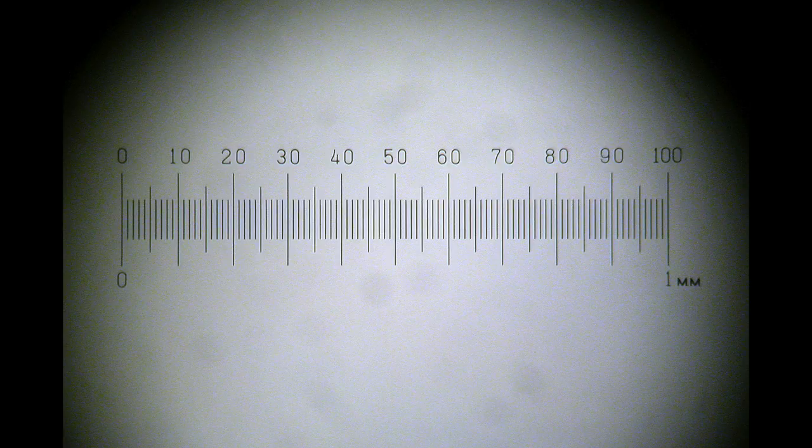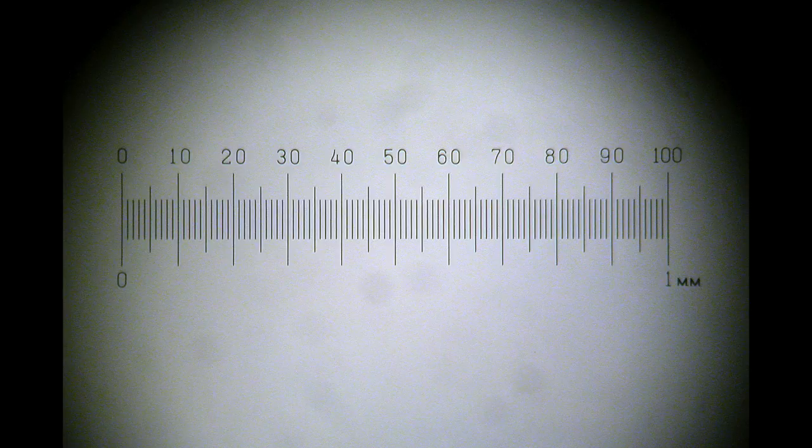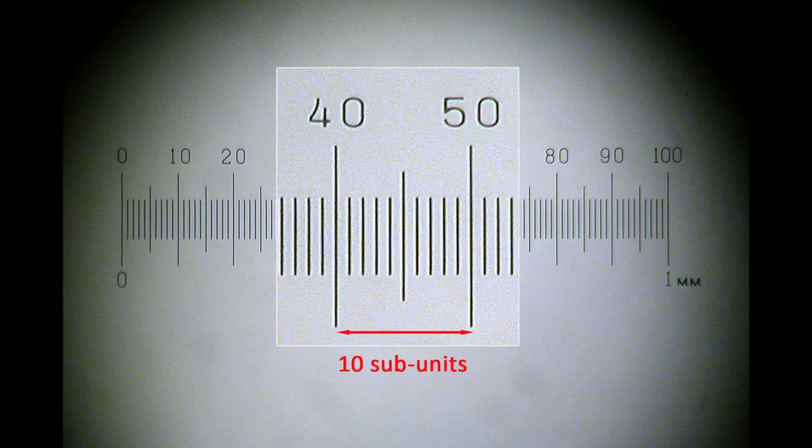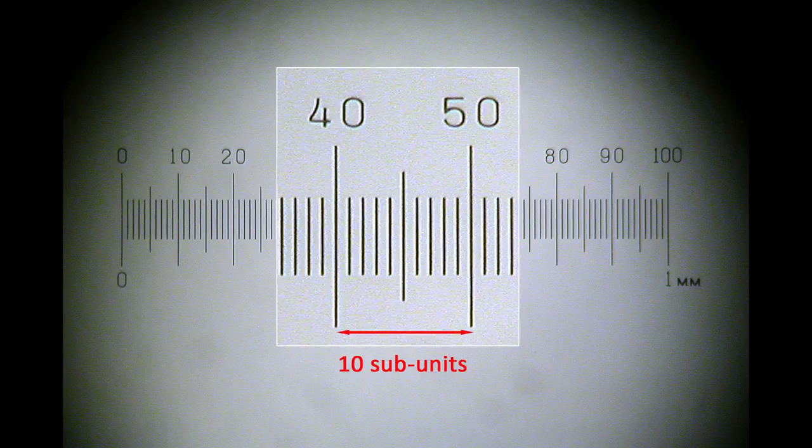You can see that this 1mm scale is divided into 10 blocks, 0-10, 10-20 and so on, up to 100 on the far right. Notice also that each block is further subdivided into 10 subunits, with a marker point at the 5th subunit. So what you're actually seeing is 1mm divided into 100 subunits, seen here.